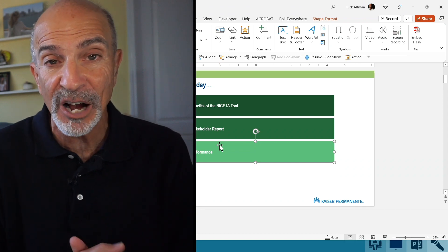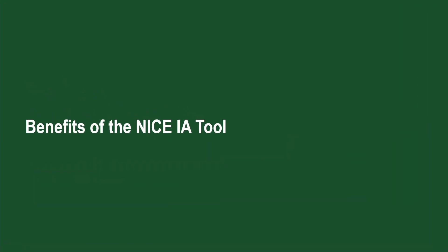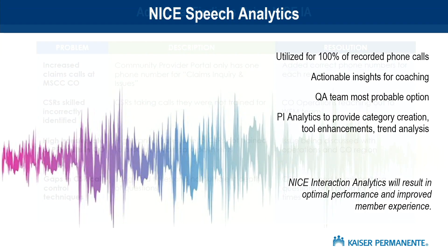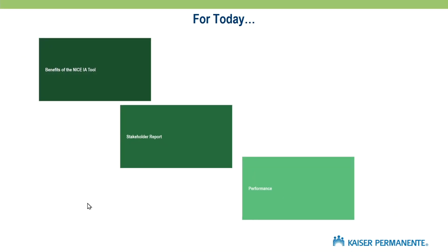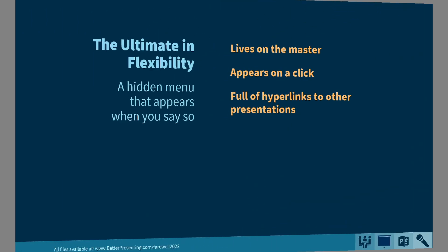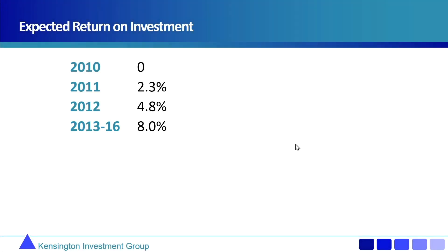Thanks to these custom shows, if I just advance, it automatically goes to that first one, where now we're going to scroll through. And when we're done, we come back, we zoom in and we zoom out. Or I could click to go to any one of them. Flexibility on steroids — where you can just be so responsive to your audience.